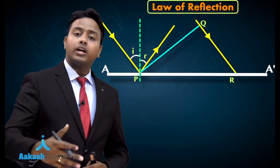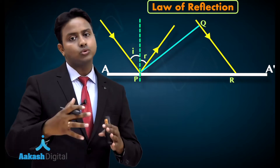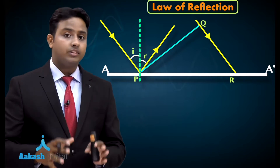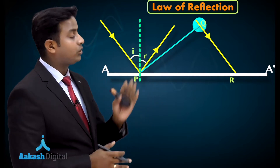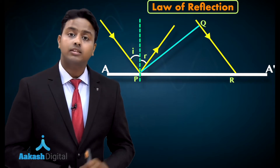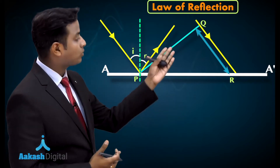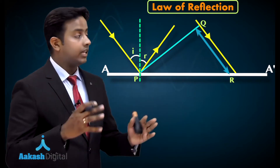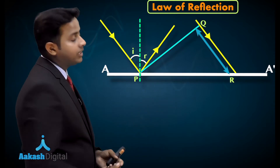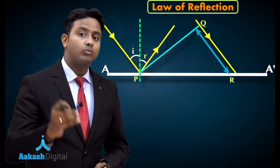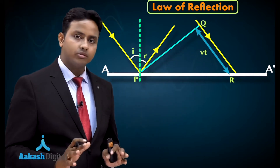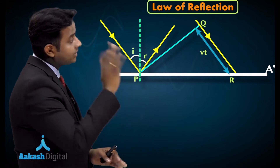According to Huygens theory, each point on a wavefront is a source of secondary wavelets, and to get a new wavefront we need to do a geometrical construction. The secondary wavelets emanating from point Q have to travel extra time t to reach point R. Let the time taken by light to travel from Q to R be t, and the speed of light in medium one be v, so the distance QR equals vt.